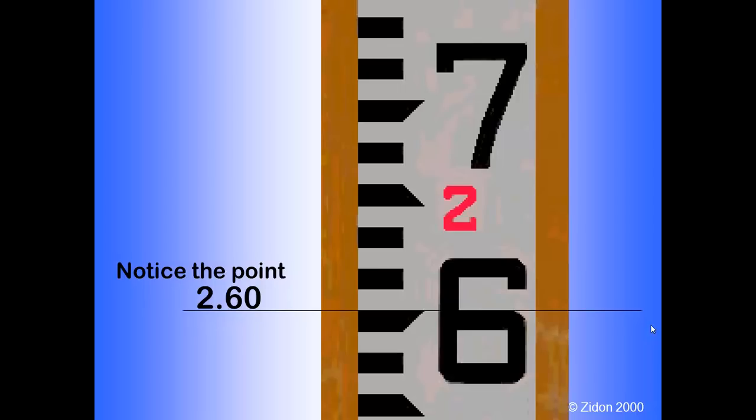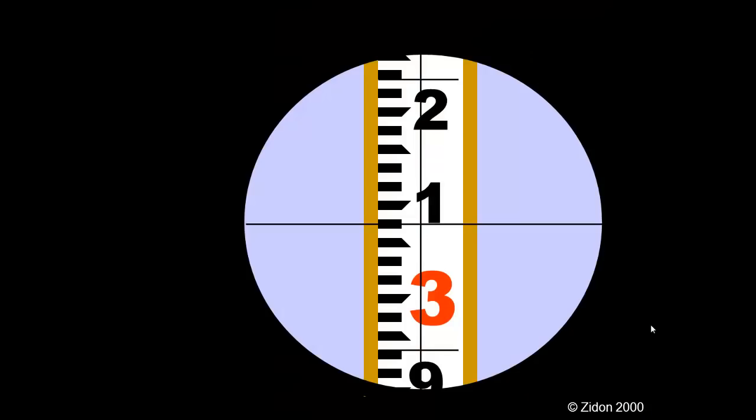Again, remember that the top of the black lines are even hundredths of a foot, and the bottoms of the black lines are odd hundredths of a foot.